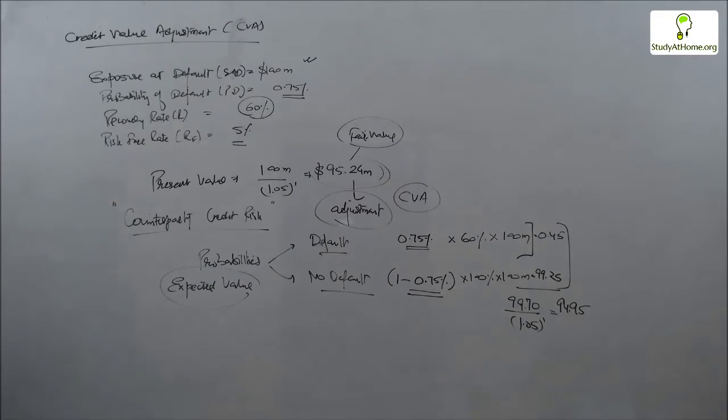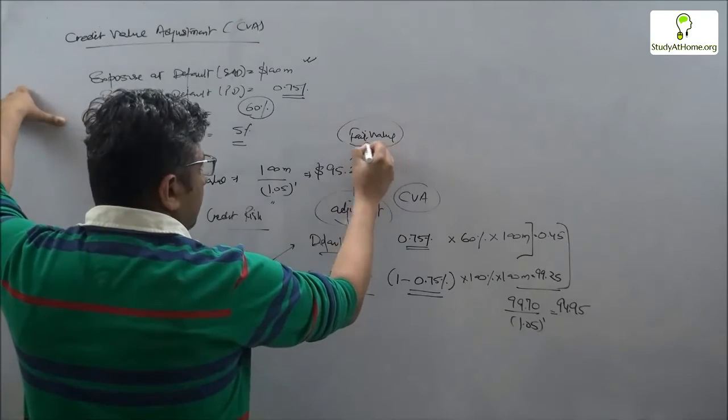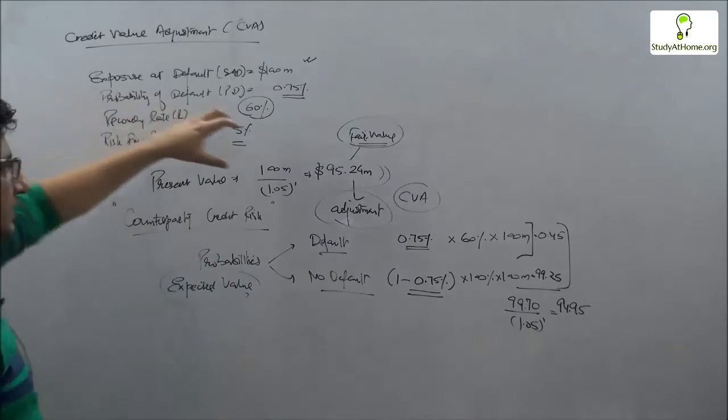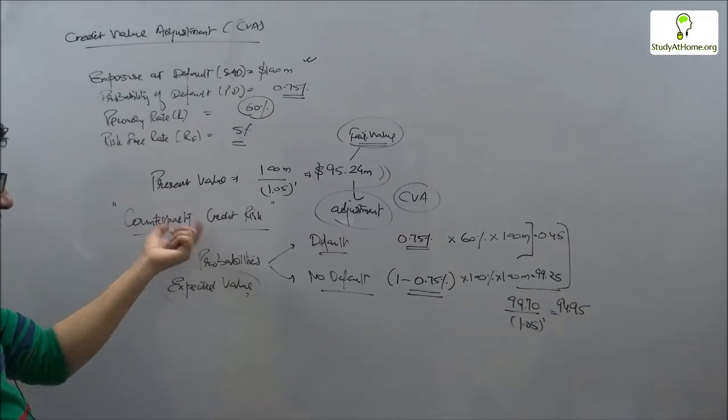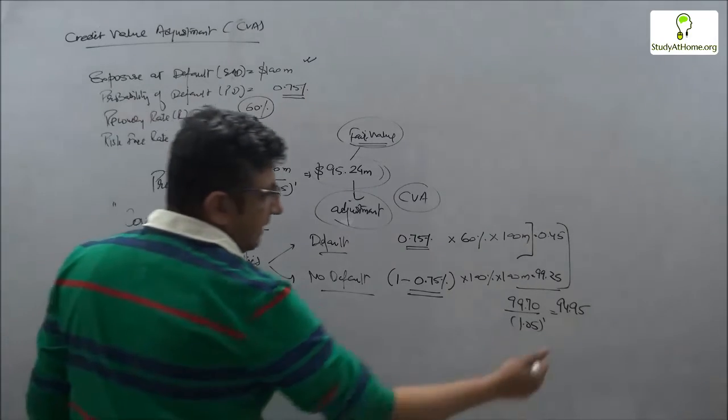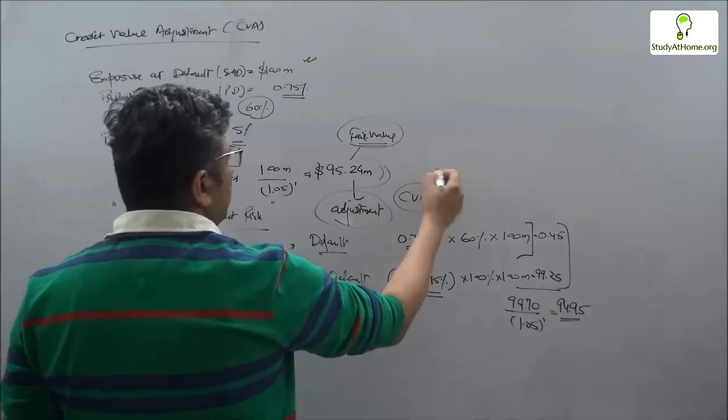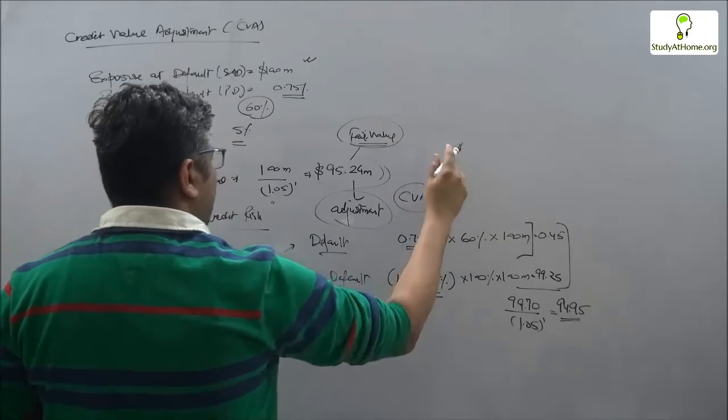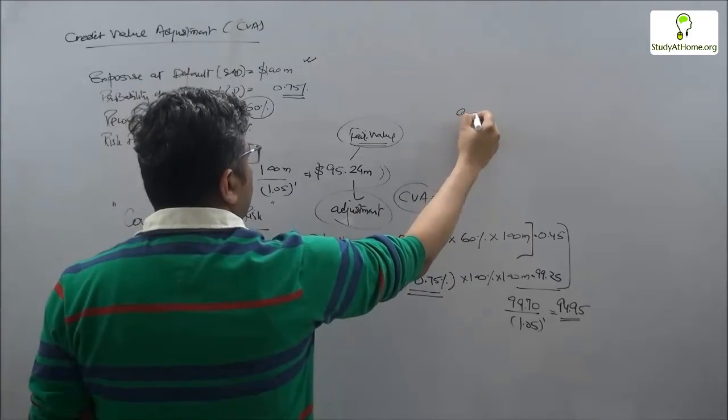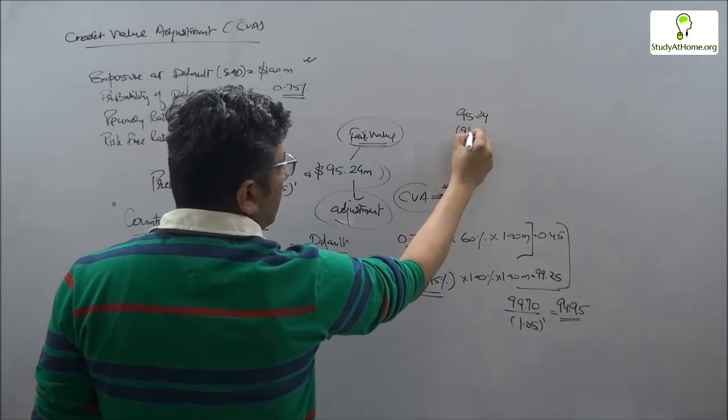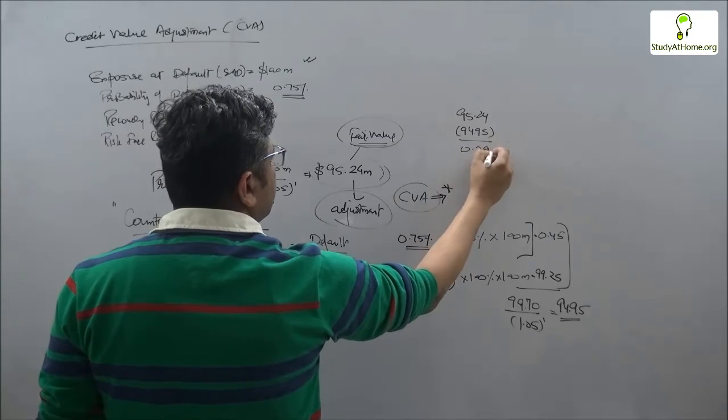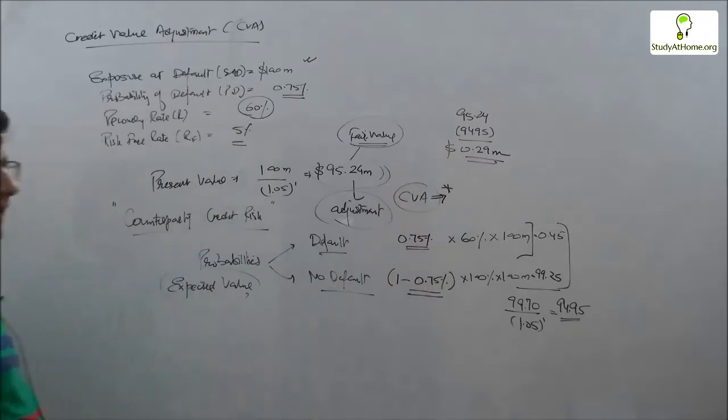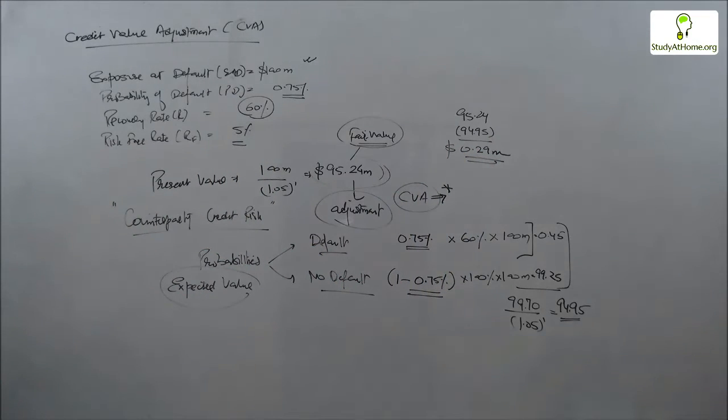What you are observing is that while the fair value without counterparty risk adjustments was 95.24, the value after taking into consideration those counterparty credit adjustments comes at 94.95, which means that we need to do a CVA, the Credit Value Adjustment, of 95.24 minus 94.95, which comes at 0.29 million dollars.